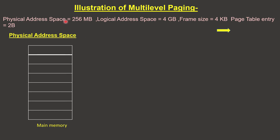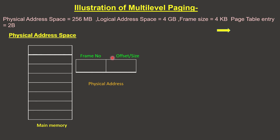Physical address space is the total size of the primary memory — that is, the main memory — and we divide it into different frames. The total size is 256 MB. For the physical address, we represent 256 MB in bits: 256 MB equals 2 to the power 28, so the physical address is 28 bits.